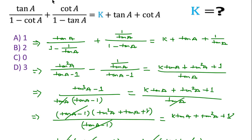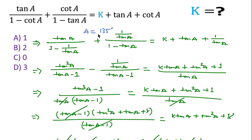Now in the second method I will put A equal to 135 degrees. We cannot put 45 degrees because if we put 45 degrees then the denominator part becomes 0, making it infinite. Since we have to find the value of k from four options, k is independent of the angle. That is why we can substitute any valid value of A.